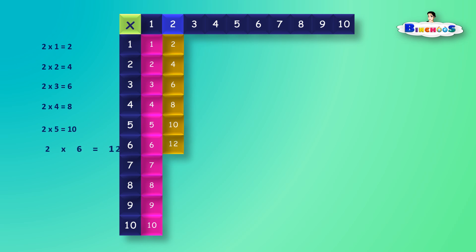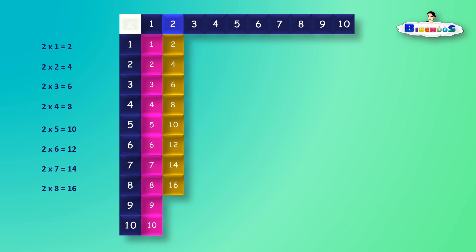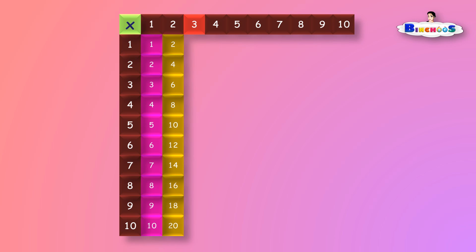2 times 6 is equal to 12. 2 times 7 is equal to 14. 2 times 8 is equal to 16. 2 times 9 is equal to 18. 2 times 10 is equal to 20. Multiplication of 3.